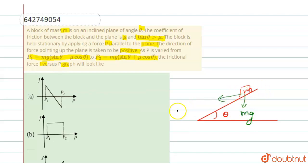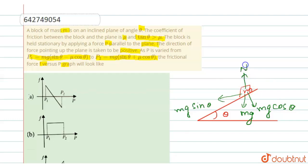The downward force is mg, which we resolve into two components: mg sine theta along the plane and mg cos theta perpendicular to the plane. The upward perpendicular force is the normal force, and the force p is parallel to the inclined plane.